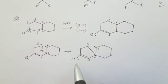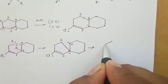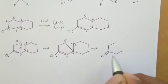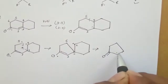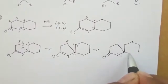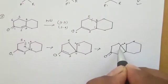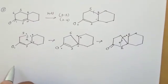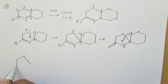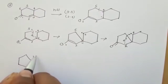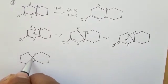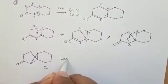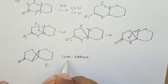After joining positions 3 and 5, the radical at position 4 remains, and then we join positions 4 and 2. After rearranging, we get the final product of the lumiketone rearrangement. This is the final product, and this is a very important reaction from the examination point of view.